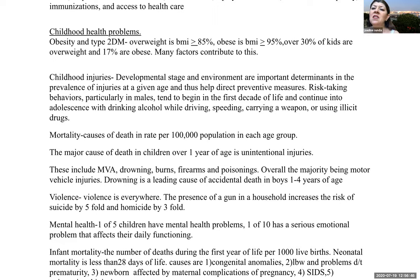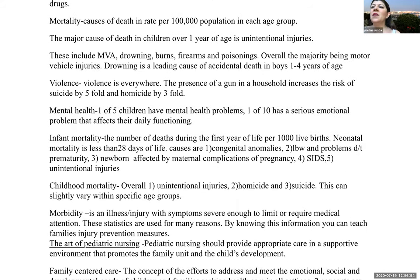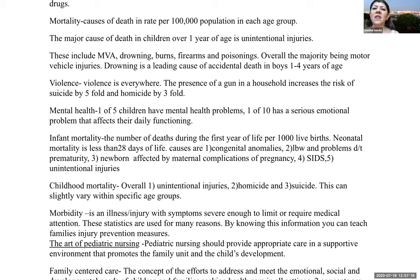Mortality: this is the cause of death per 100,000 population in each age group. The major cause of death in children over one year of age is unintentional injuries. These include motor vehicle accidents, drowning, burns, firearms, and poisonings — the majority being motor vehicle accidents. Drowning is a leading cause of accidental death in boys one to four years of age.